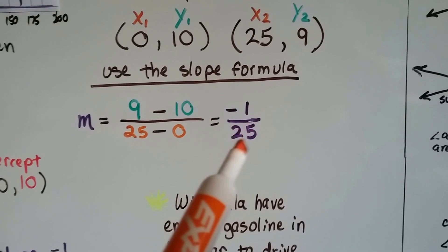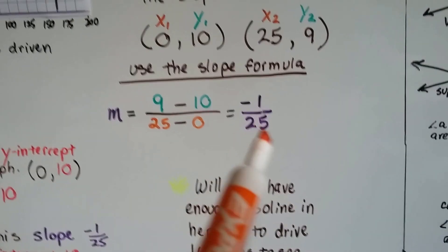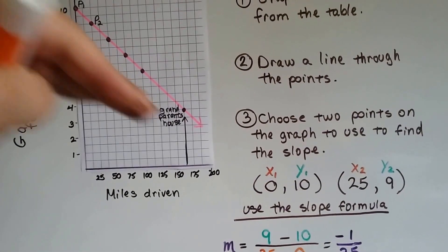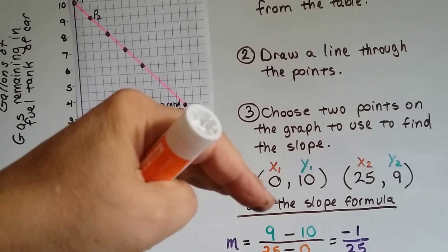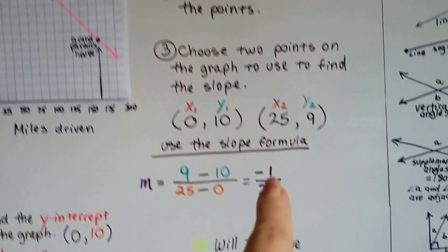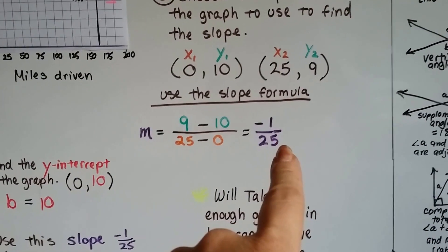Look, we have a negative value for our slope. And as I always say, when it falls to the right, we know it's going to be a negative slope. And look at that, it is. So here's our slope, negative 1/25.